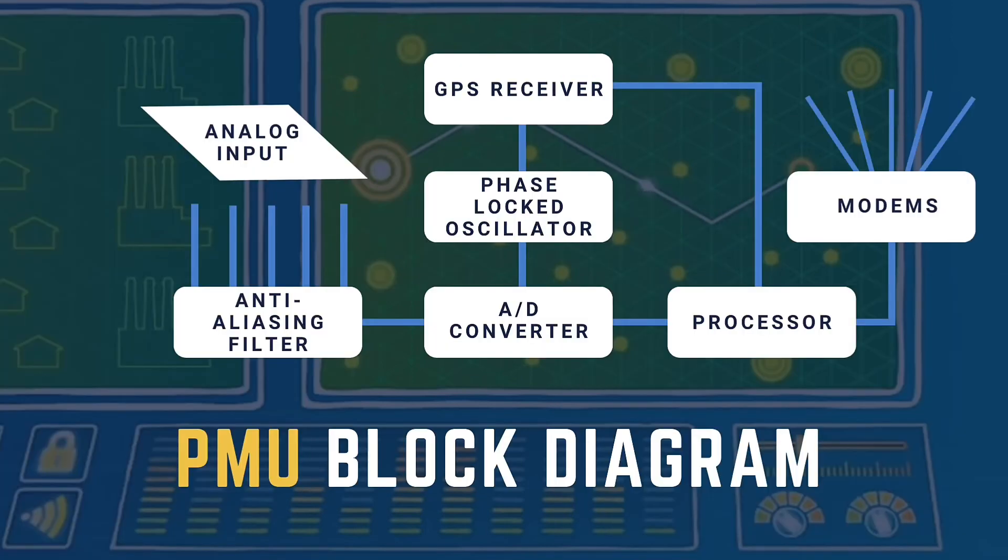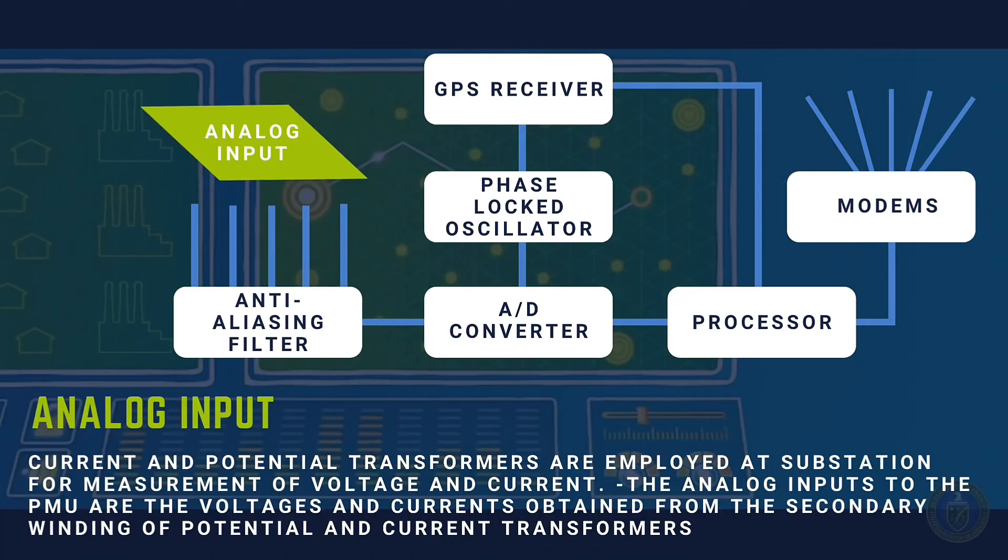This is the block diagram of a phasor measurement unit. Analog input: Current and potential transformers are employed at substations for measurement of voltage and current. The analog inputs to the PMU are the voltages and currents obtained from the secondary winding of potential and current transformers.